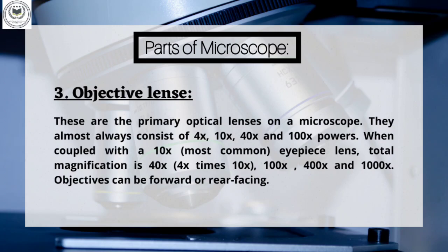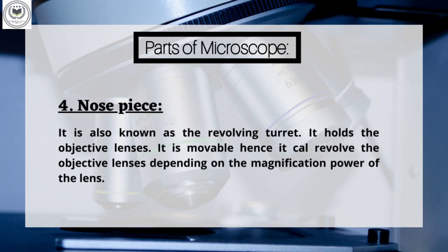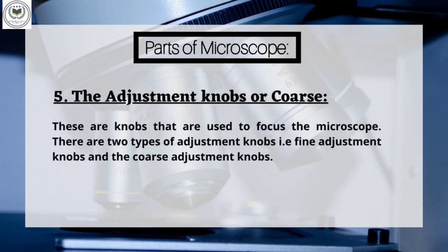Objectives can be forward or rear facing. Part 4: Nosepiece, also known as the revolving turret. It holds the objective lenses and is movable, hence it can revolve the objective lenses depending on the magnification power of the lens.